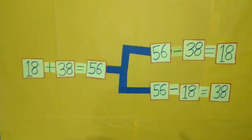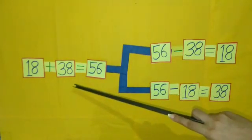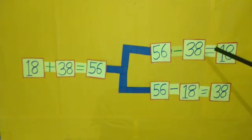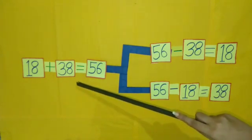So students, we can get 2 subtraction facts from addition fact. And by making the subtraction fact the base, we have also learned to check addition sums. That means that when we add 38 to 18, it becomes 56.